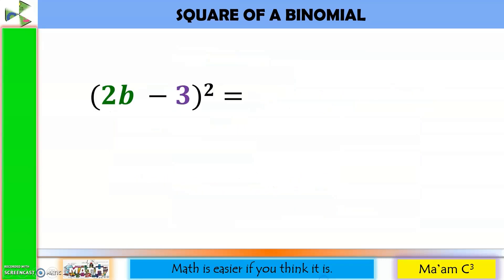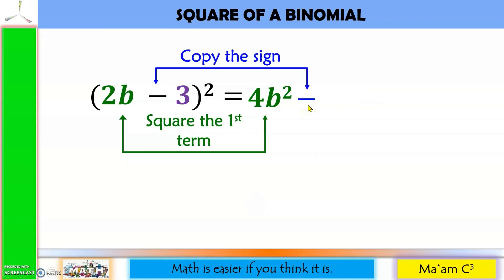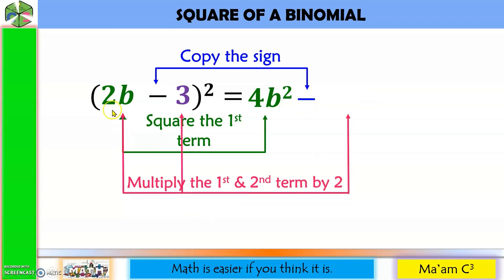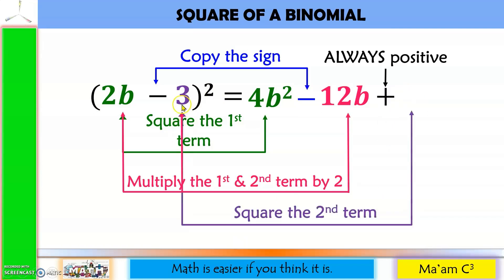One more example. Square the first term: 2 squared is 4, b squared is b squared, so we have 4b squared. Copy the sign — so we have minus. Multiply the first and second terms: 2b times 3 is 6b, times 2 is 12b. The third sign is always positive. Finally, square the second term: 3 squared equals 9. Isn't that easy?